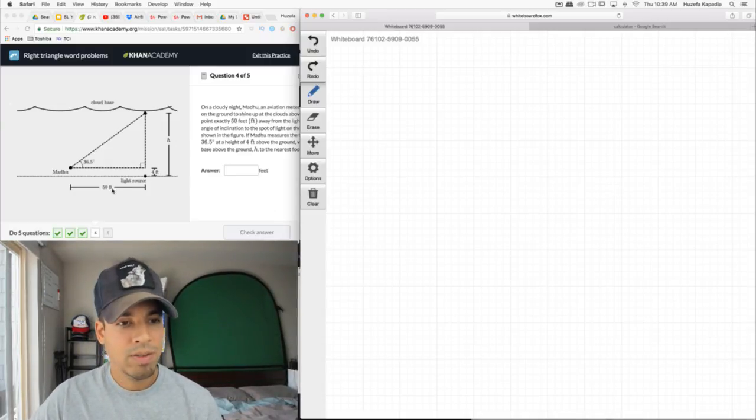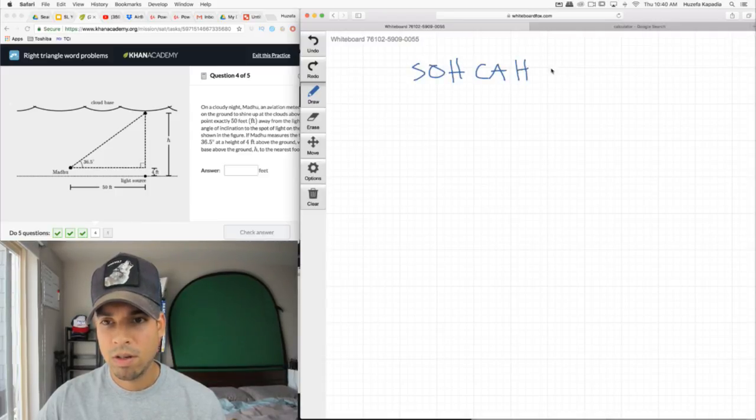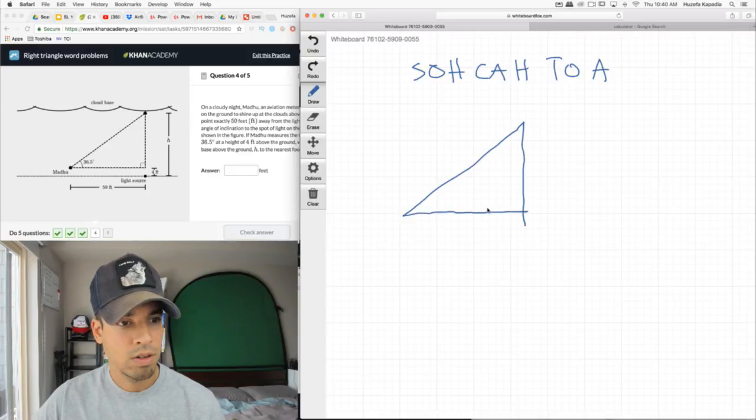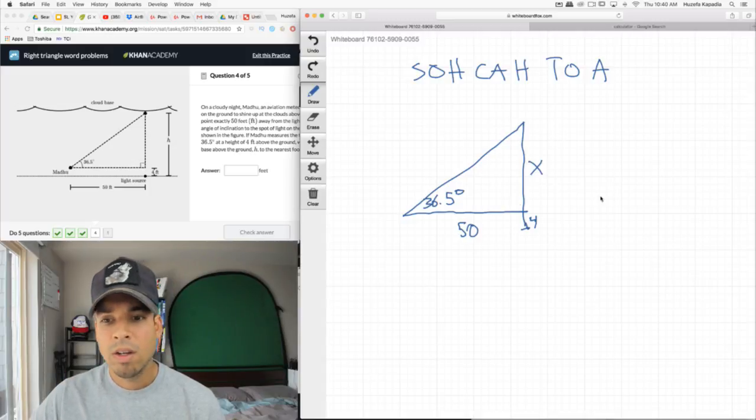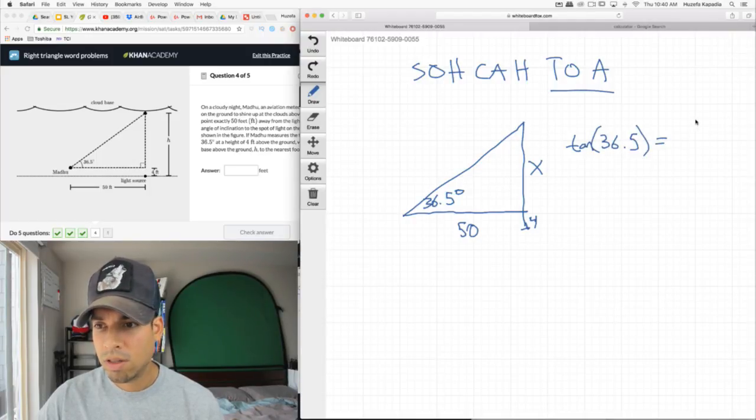Let's look at this triangle. We're given an angle, we're given a side, and we've got a missing side. That's SOHCAHTOA. We've got a triangle here. We've got 36.5 degrees. We've got 50, and we're trying to find x. But remember, x doesn't factor in this 4 feet, so we've always got to add in 4 feet onto x to get our answer. I've got opposite and adjacent sides. I need to find the opposite. I know the adjacent, so we need tangent.